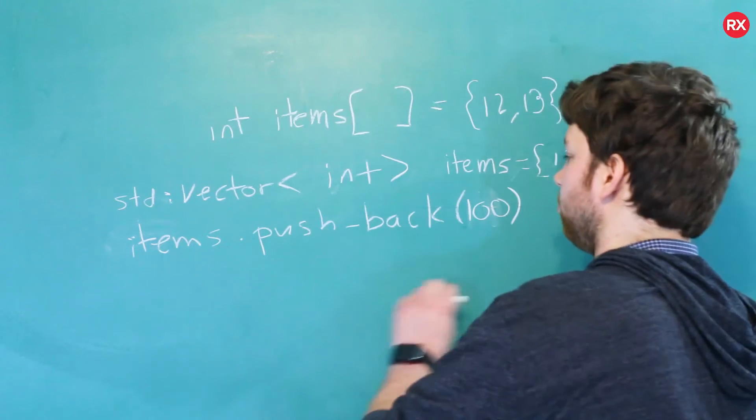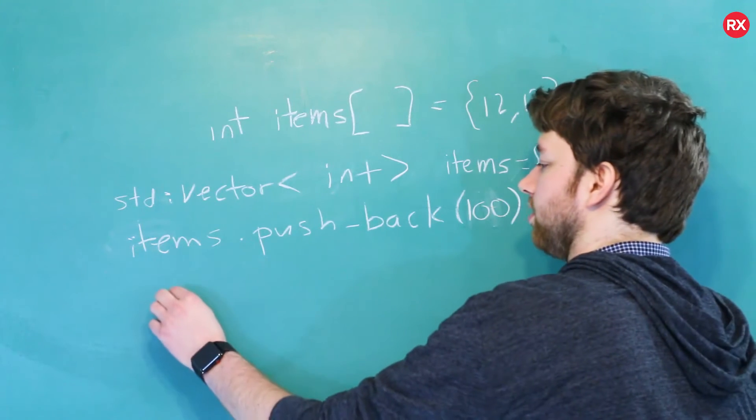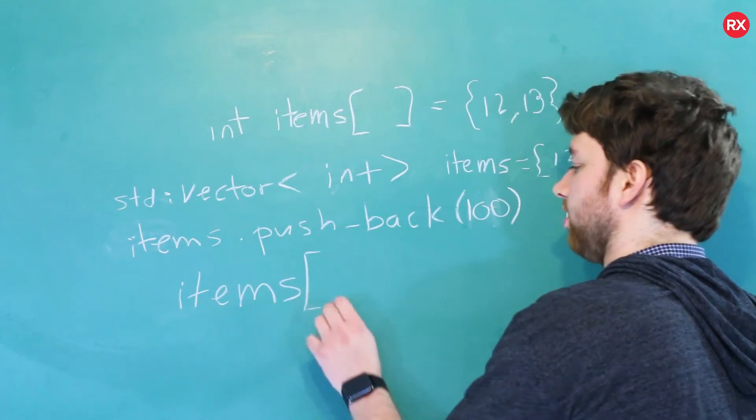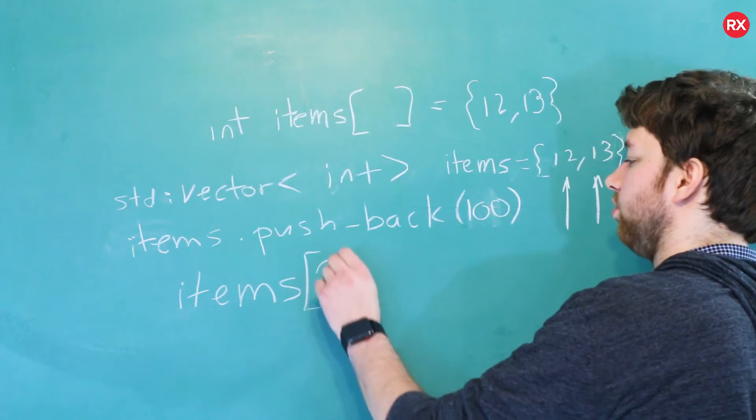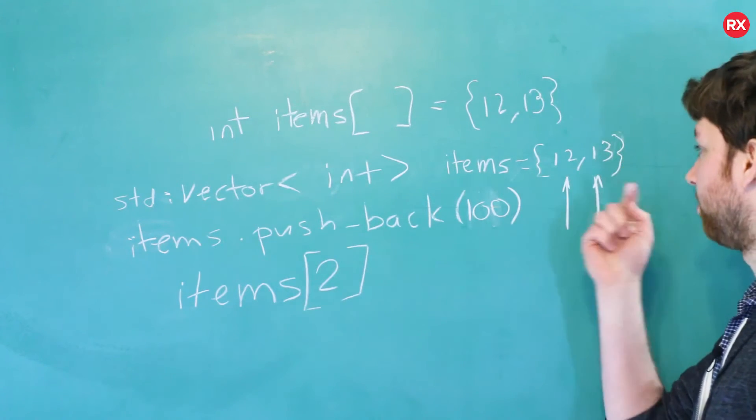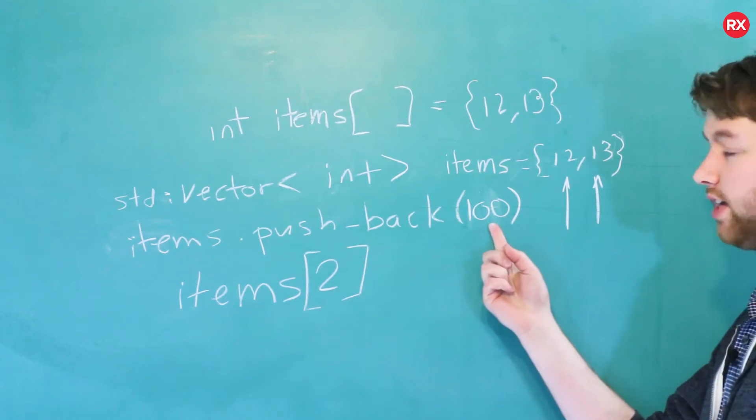So how do we get elements back out of a vector? Exactly the same way as you would with an array. So all you would have to do to grab that 100 is you would say items, and then using array-like syntax, you would just say index 2. This is index 0, this is index 1, and then this is index 2.